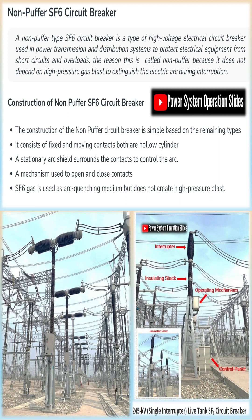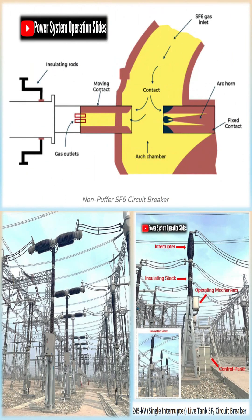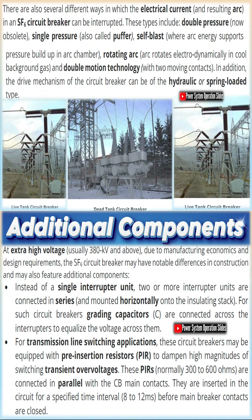These breakers are composed of several main components: the interrupter unit, where the arc interruption takes place using high-pressure SF6 gas; the insulating stack or bushings that provide insulation and mechanical support; and the mechanical operating mechanism that drives the opening and closing of contacts, typically using spring or hydraulic power.